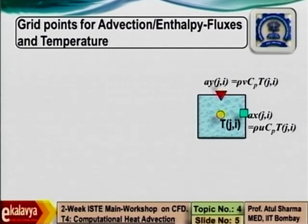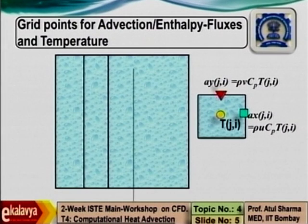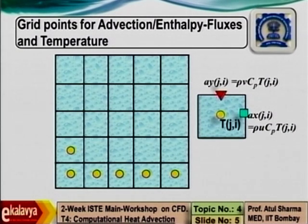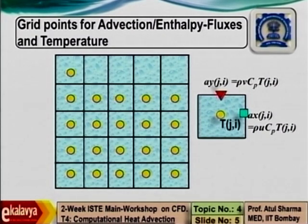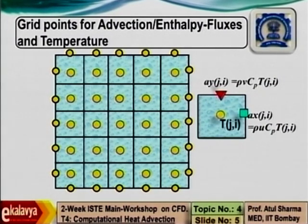If I decide to follow a convention that this is the positive phase for this control volume and the running indices for it will be j comma i, then the running indices of this phase center will be that of the control volume for which this is the east phase. This is the east phase for a control volume whose running indices is j comma i minus 1, so this will become qx at j comma i minus 1. A similar convention is used in the y direction.